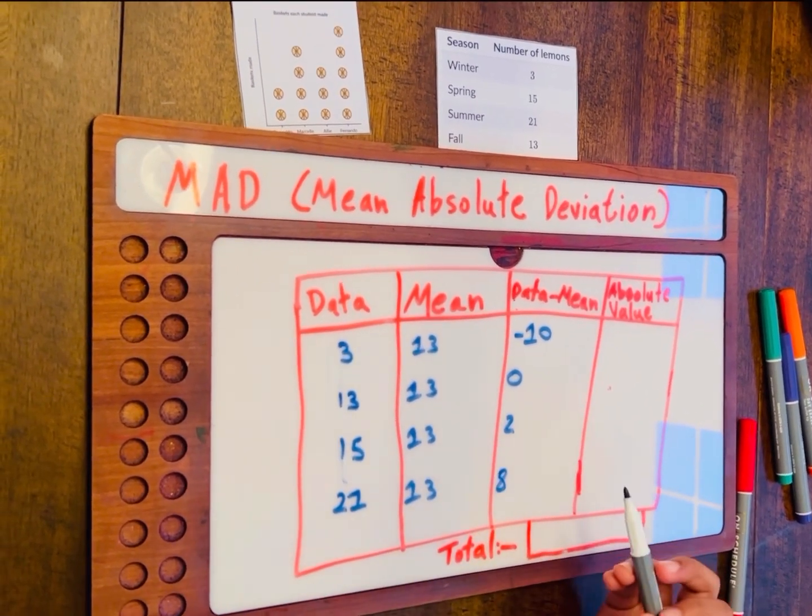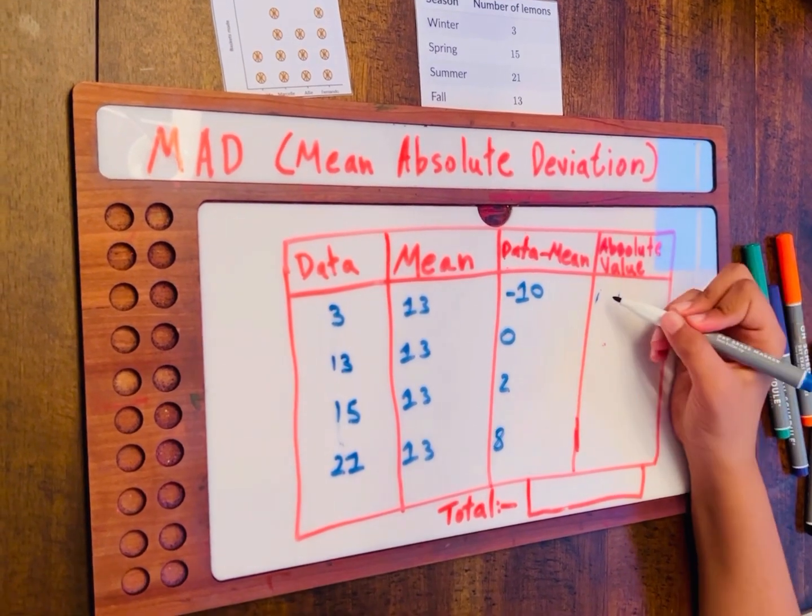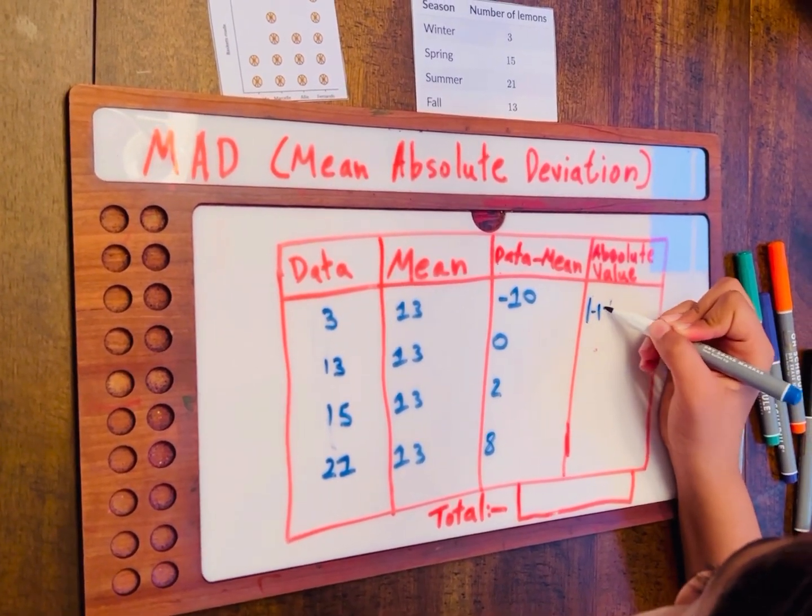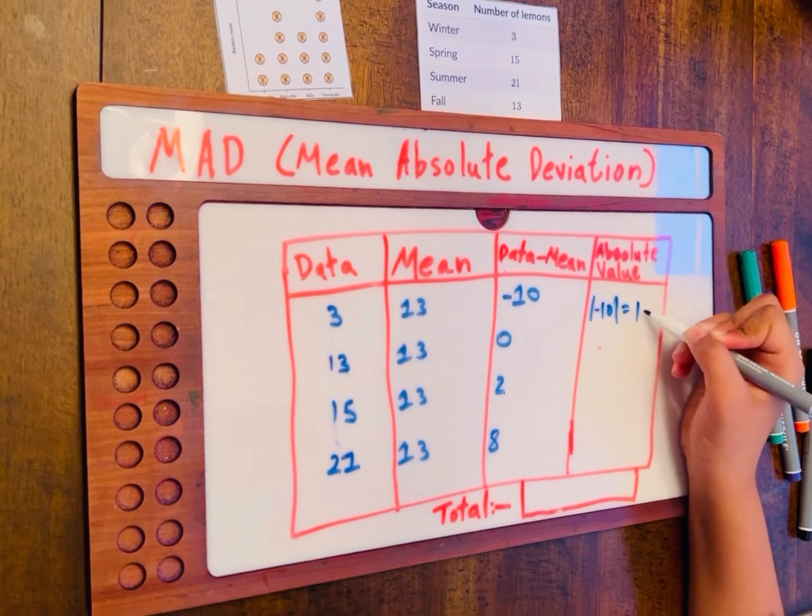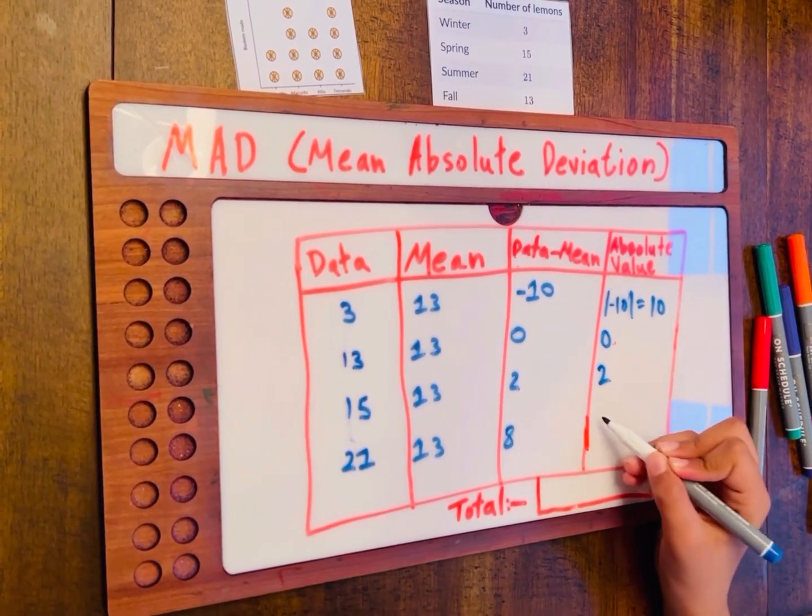Now, we have to find the absolute value. Absolute value is basically converting negative numbers to positive numbers. So, from minus 10 over here, we get that to 10. This would be 0. This would be 2. This would be 8.